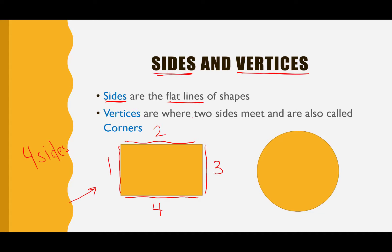Vertices are where two sides meet and are also called corners. So if we look at side one and side two, they meet right here in this spot — that's called our corner, our vertice. Let's count how many corners or vertices we have in this shape: one, two, three, and four. So this shape also has four vertices.